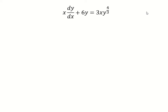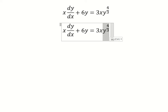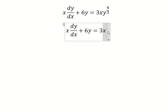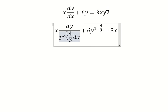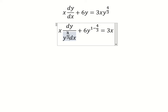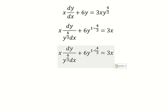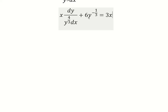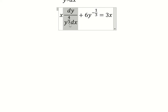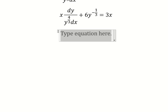Hello everybody. Today I want to show you how to answer this problem. We divide both sides by y to the power of 4 over 3. We have negative 1 over 3, so if we look carefully we have y to the power of negative 1 over 3 and dy over y to the power of 4 over 3 dx. This is about Bernoulli's equation.